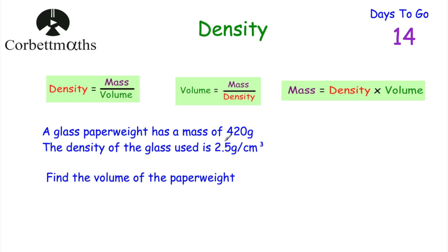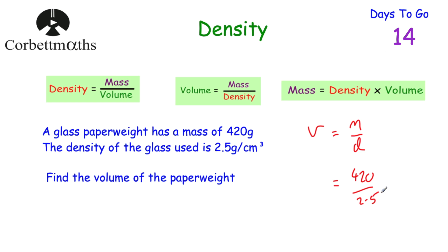We can approach this in a couple of ways. The density says 2.5 grams per centimetre cubed, so every centimetre cubed has a mass of 2.5 grams. If we divide 420 by 2.5, that tells us how many centimetre cubes there are. Using the formula, volume equals mass divided by density: 420 divided by 2.5 equals 168 centimetres cubed. So the volume of the paperweight is 168 centimetres cubed.